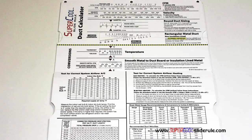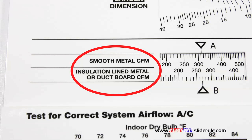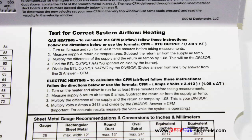Inside is packed with even more information. It performs sizing of both metal and flexible duct. It has the only direct reading conversion from smooth metal to insulation-lined metal we've ever seen. The majority of technicians have never been taught that if the insulation is on the inside of the ductwork, you cannot size it with a regular duct calculator. It has step-by-step directions for determining airflow through a gas furnace, electric furnace, or an air conditioning unit.